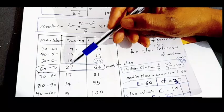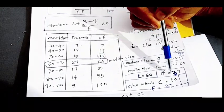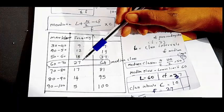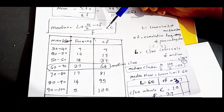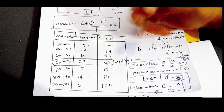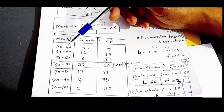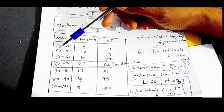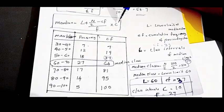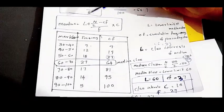F is the frequency of the median class, which is 27. C is the class interval, and it is 10.